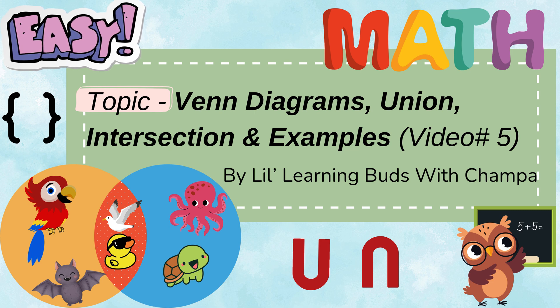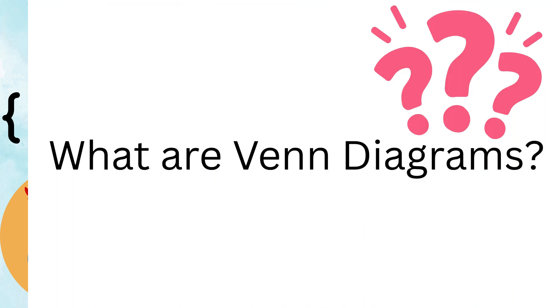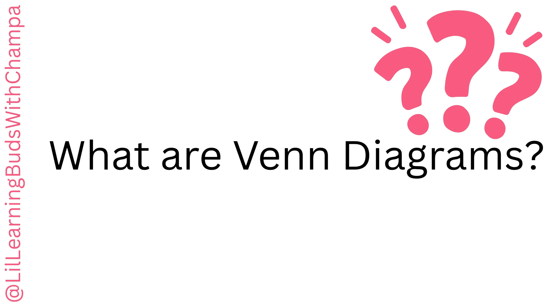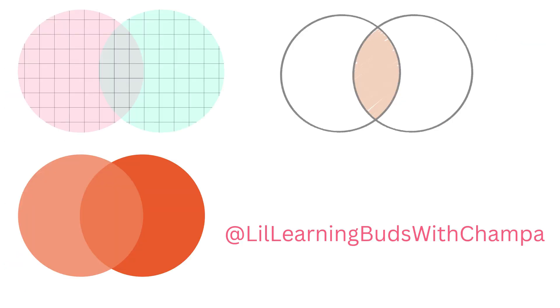We will learn about Venn Diagrams with easy examples. What are Venn Diagrams? Venn Diagrams are circles that overlap to show how things are the same or different.